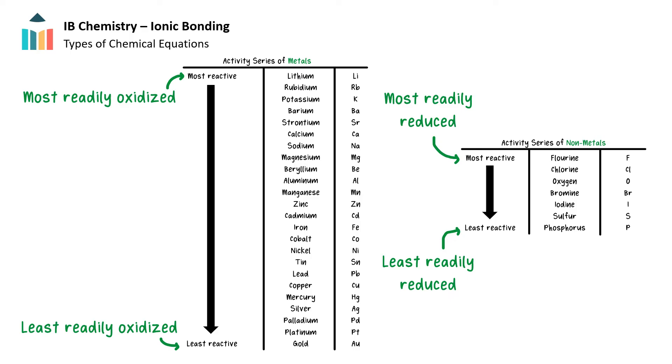Conversely, for nonmetals, the element at the top of the list is most readily reduced, will displace another nonmetal in a compound, and is therefore considered to be more reactive. Let's look at a couple of examples.